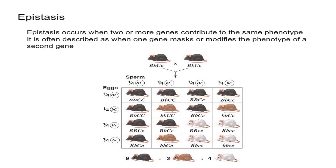This is a little different than what we were talking about before, because essentially you need two genes to contribute to one phenotype. The big thing to remember is that if you don't see a 9 to 3 to 3 to 1 ratio in a dihybrid cross — here we have a 9 to 3 to 4 ratio — you should really consider epistasis as the cause of this different ratio.